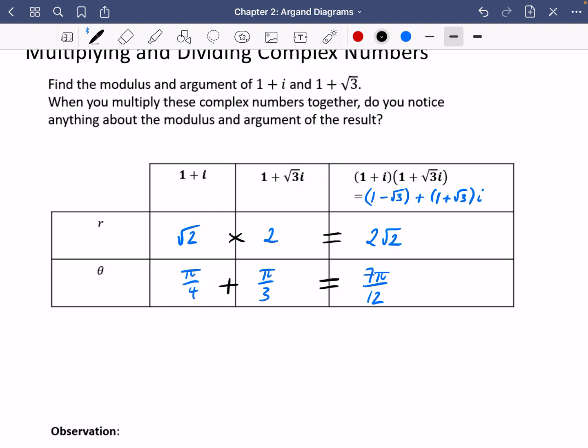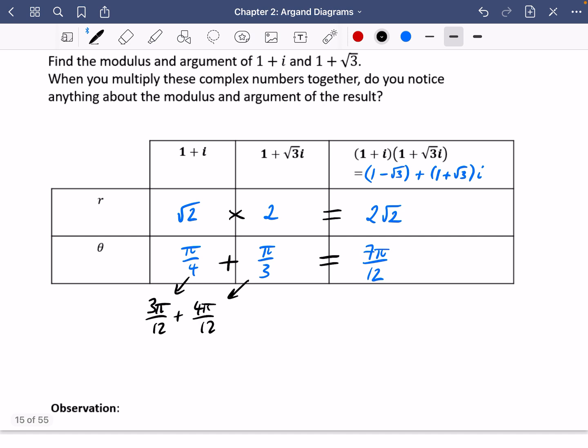These arguments are added together. If you just think about creating a common denominator, you would have 3π/12 plus 4π/12, obviously giving you the 7π/12. So the observation that we have here is that the modulus or sometimes they say moduli for plural. The moduli are multiplied and the arguments are added.